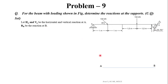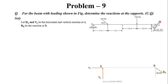Drawing the free body diagram of beam AB. There are two reactions on the left side at point A: a vertical reaction VA and a horizontal reaction HA. At point B, this is a roller support. The roller support reaction is perpendicular to the supporting plane — that is, in the perpendicular direction towards point B.